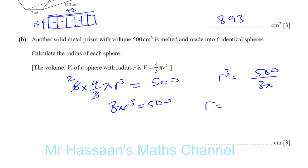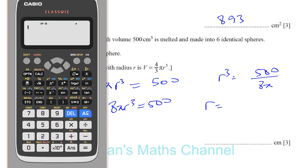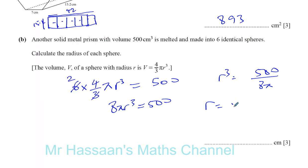So you're going to have the cube root of, all in one step, cube root of fraction 500 divided by eight pi. That gives us 2.7096. That's 2.71 centimeters to three significant figures, as we should leave our answer.